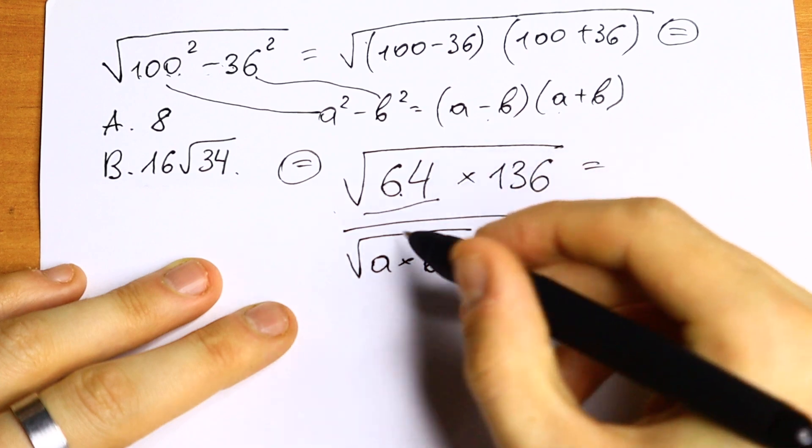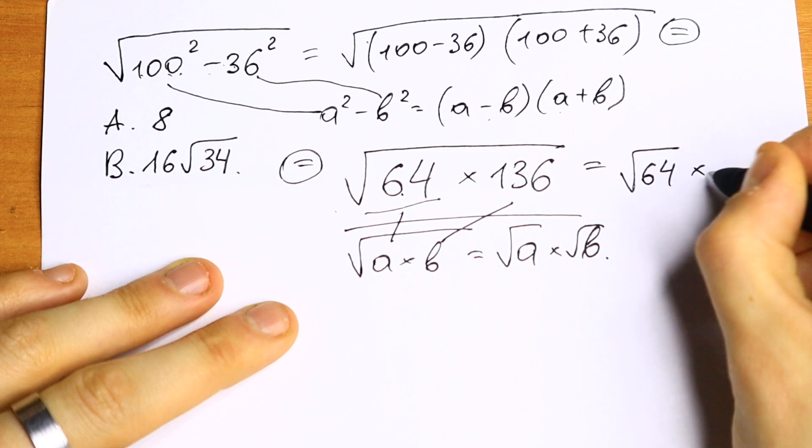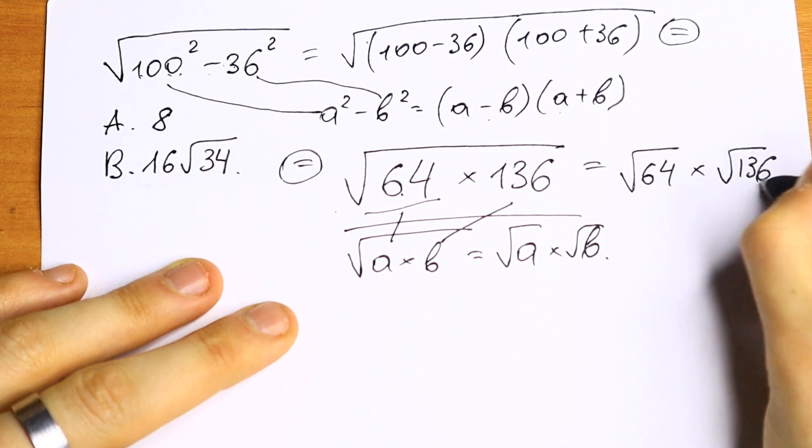We have a product, and we have this is our a, this is our b. So we will have square root of 64 times square root of 136.